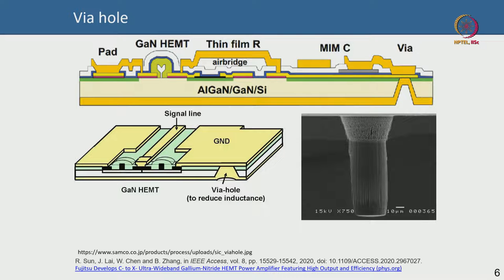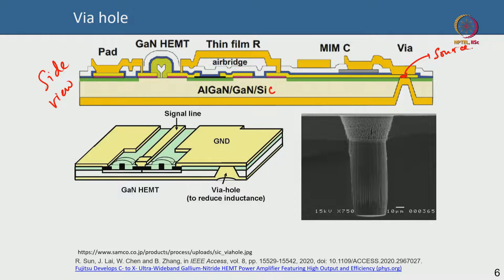Now we look at via hole technology, which I have mentioned briefly before. This is the side view of a GaN wafer on SiC. What you do is etch the SiC all the way until you reach a metal pad on top, which is your source, then you plate metal — typically by electroplating or sputtering — to create a ground plane below that is shorted to the source.